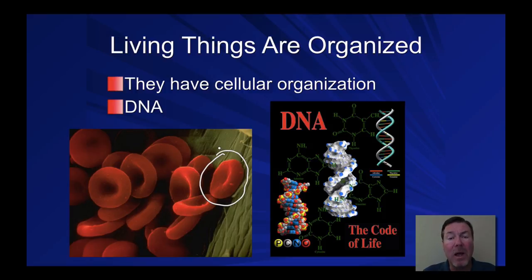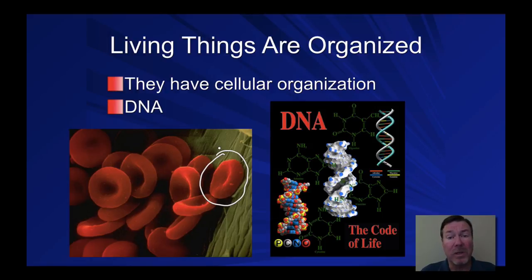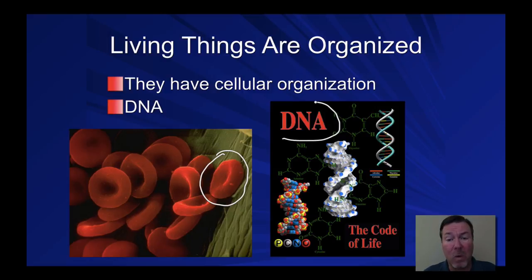All living organisms are made of at least one cell. They can be multicellular like the human body, animals, or plants, or they can be single-celled like protozoans. But they all have at least one cell. Going down in levels, we have the organization of DNA. All living things have DNA or a similar form of nucleic acid like RNA — it's the genetic code.